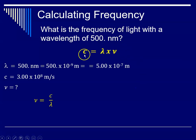So here I've rearranged the equation. So I've divided both sides by lambda. And that gives me that nu, the frequency, is equal to c, the speed of light, divided by lambda, the wavelength. So let's plug in the numbers. So here's my speed of light. Here's my wavelength. And then I have to check my units.